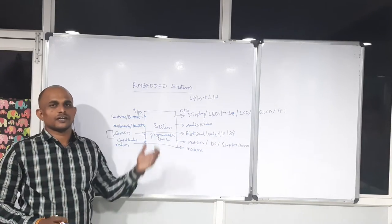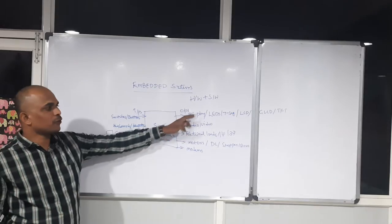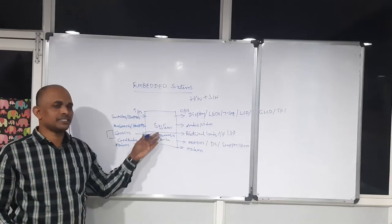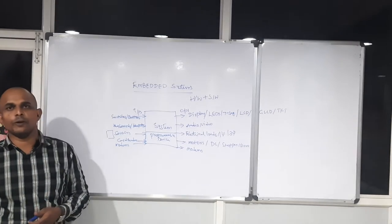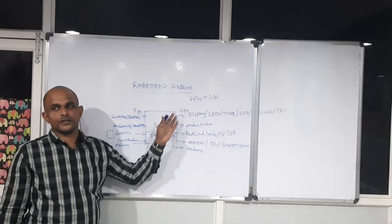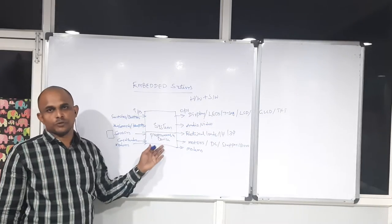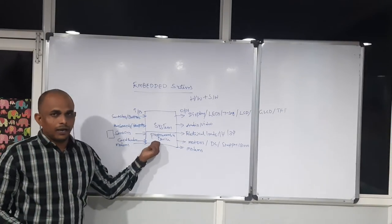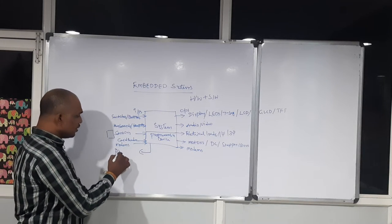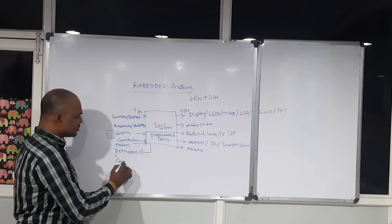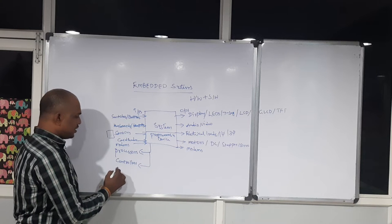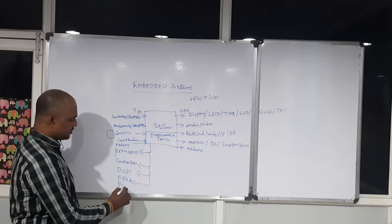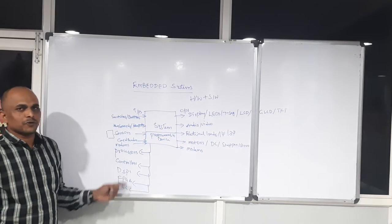What is the meaning of a programmable device in electronic systems? There are many components you may find from a hardware point of view in electronics — resistors, capacitors, integrated circuits, and different components on a board. It may be a calculator board, TV board, mobile board, or any product. But among these different hardware components, you need to search for the programmable device. Every system is going to use one programmable device. As an electronics student, you are aware of these programmable devices: processors, controllers, digital signal processors (DSP), field programmable gate arrays (FPGAs), and PLCs.